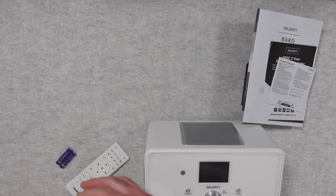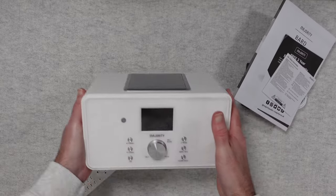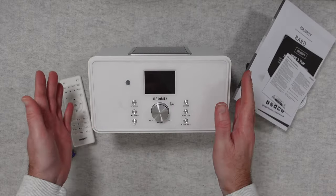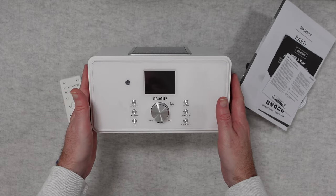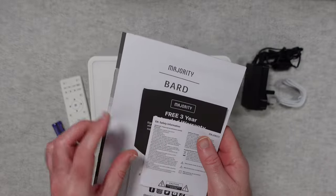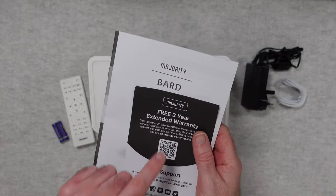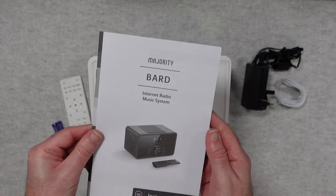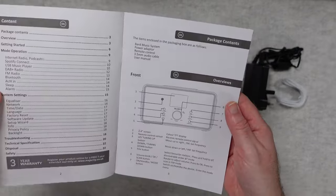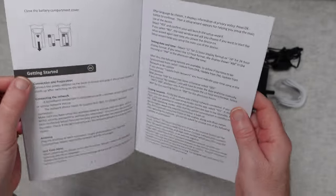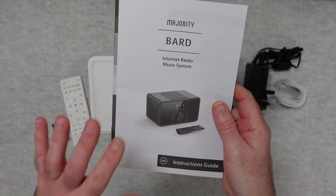So let's just pop the box to one side and take a look at the box contents. Of course you get the Majority Bard music system itself. You also get some paperwork, so we get some safety information. If you register your product you get a three year extended warranty. We've also got a full printed instruction guide which is going to give you a really good step by step guide to getting your system up and running.